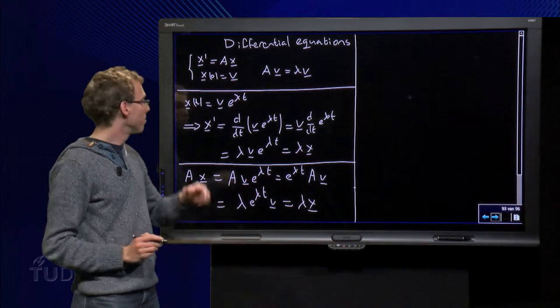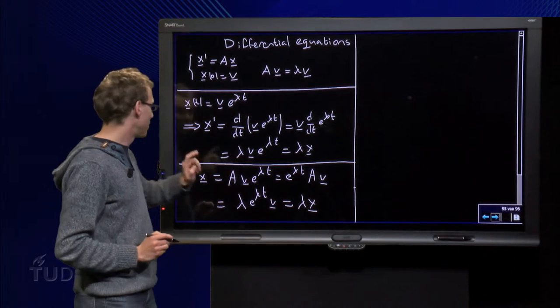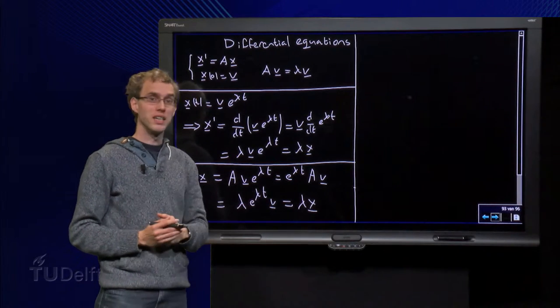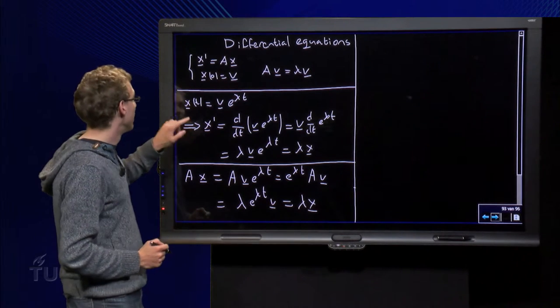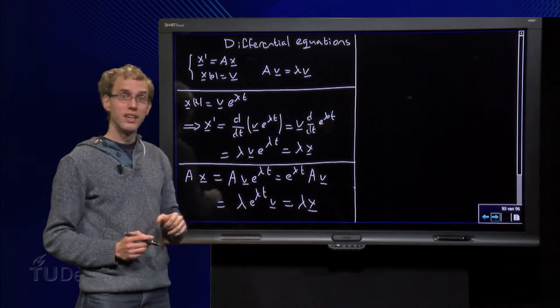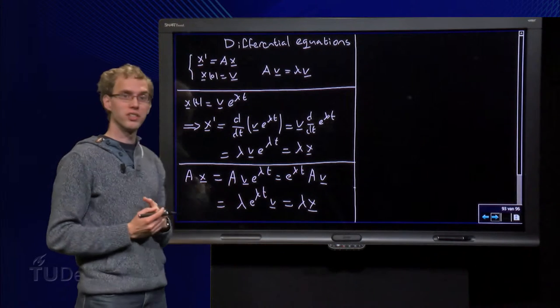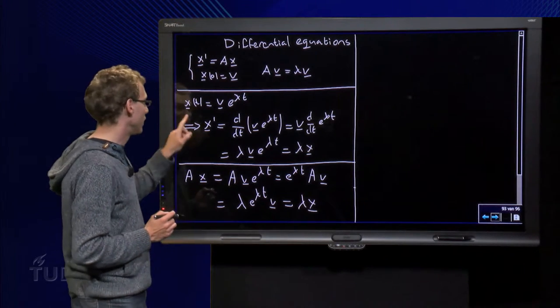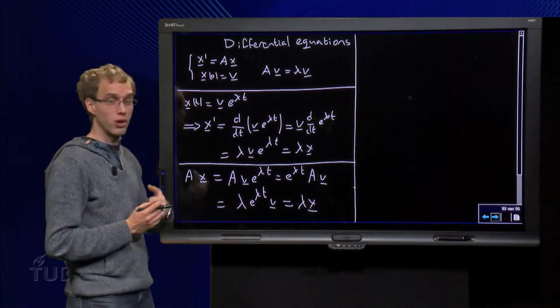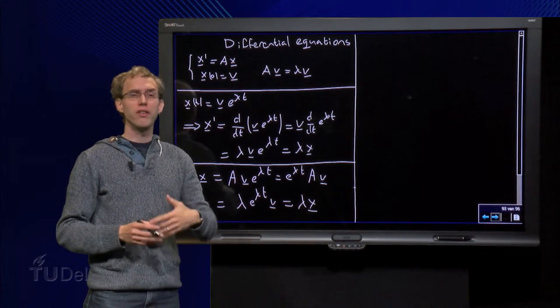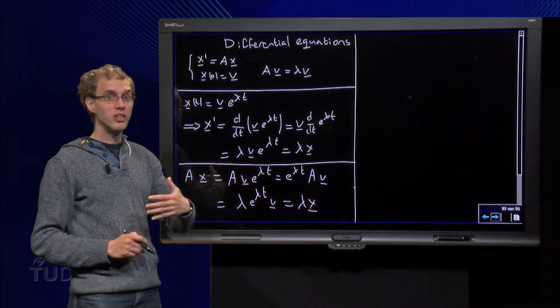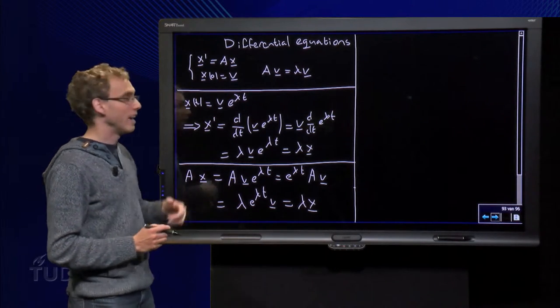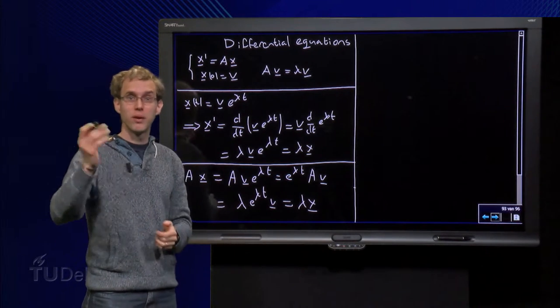So what do we see? x prime equals lambda x, A times x equals lambda times x. In other words, x prime equals A times x, so this x is the solution of the differential equation x prime equals A times x, and check t equals zero gives the correct initial condition. So if we would have an initial condition of an eigenvector, then the solution looks really nice, it's just x of t equals v times e to the power lambda t.